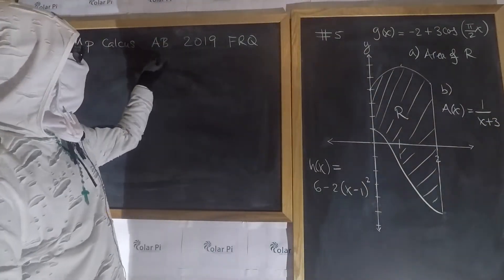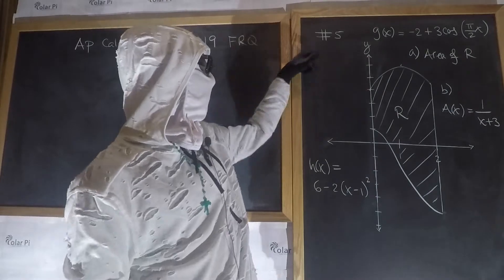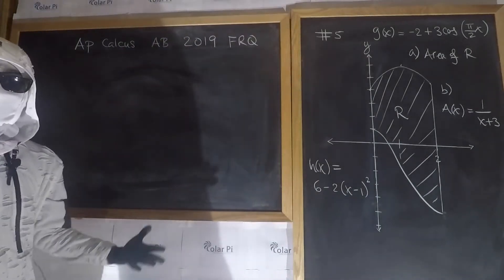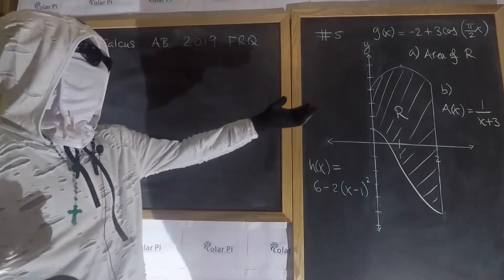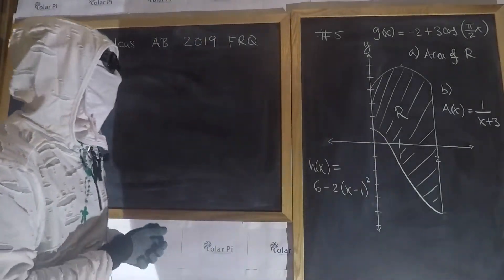2019 AP Calculus AB FRQ problem 5. I've taken the time to draw you a nice little visual. In part A, we have to figure out the area of R, and that's fairly straightforward.